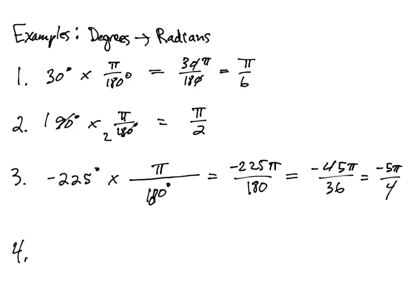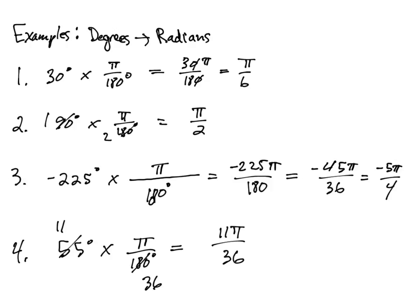Lastly, 55 degrees. Starting in degrees and going into radians, put π in the numerator and 180° in the denominator. Divide 55 and 180 each by 5 to get 11 and 36, giving 11π/36 radians.